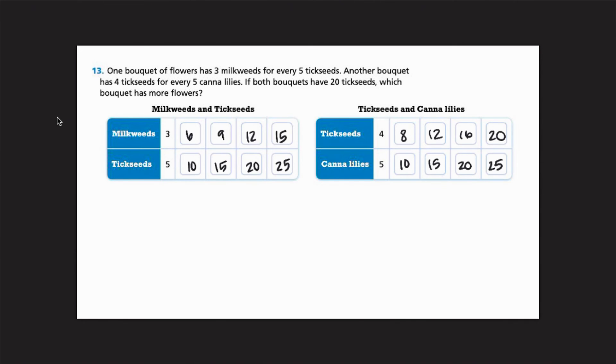Okay. And then on this one, tick seeds, 20. I'm going to use this ratio. So looking at the two, which bouquet has more flowers? Well, it looks here pretty simple. This one has 12 and this one has 25. So this one here is our clear winner. So we would write down tick seeds. The bouquet that has 20 tick seeds will have more flowers and canna lilies.